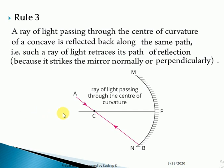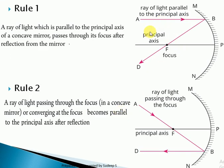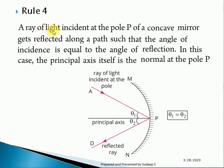Students usually make a mistake here — they pass the light through the focus and retrace it back along the same path. Remember: when a ray of light is parallel to the principal axis it passes through the focus, and when it passes through the focus it becomes parallel to the principal axis — it does not retrace back. Avoid this mistake. Rule 4: A ray of light incident at the pole of a concave mirror gets reflected such that the angle of incidence equals the angle of reflection; in this case the principal axis itself acts as the normal.